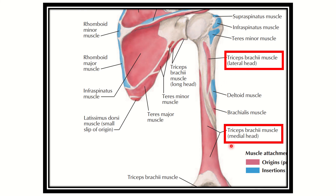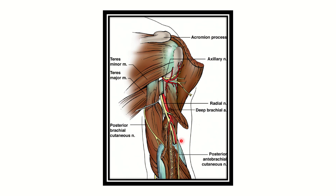The question asks about the structure which lies between the lateral head and the medial head — that means in this area. This region is known as the radial groove. In the third picture we can clearly see the long head, the lateral head, and the medial head, and a structure which passes between them. This structure is the radial nerve and deep brachial artery.